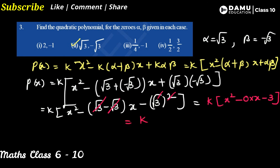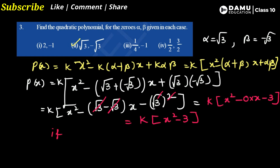k into x squared minus 0 — that term is 0 so we do not need to write it — minus 3. If k equals 1, that implies 1 times x squared minus 3, giving x squared minus 3 equals 0 as the required expression. This is how we find it.